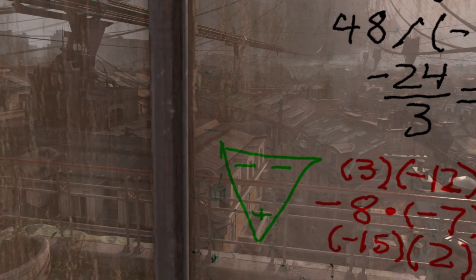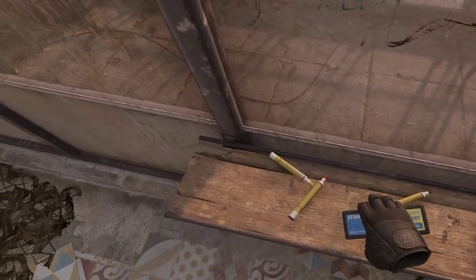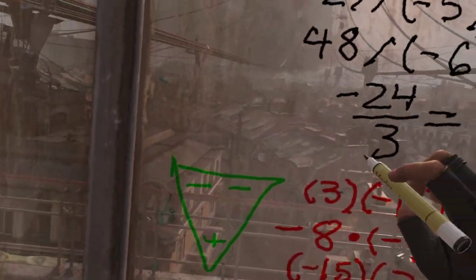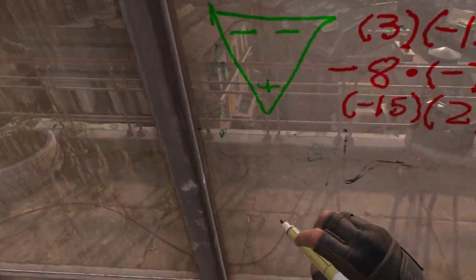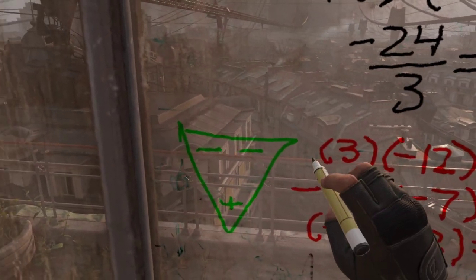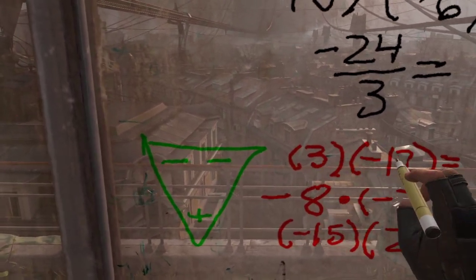Alright, so let's go ahead and review the Doritoman strategy. Grab my black marker. So remember, the Doritoman strategy with multiplication says that you need to first look at the signs of the numbers in the problem.